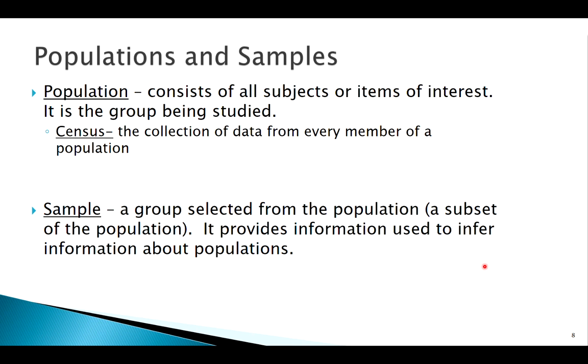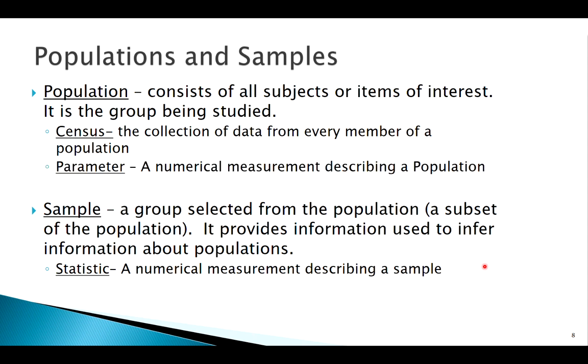A statistic, like we've already talked about, is some number that we calculate from our sample. So statistics are associated with our sample. And statistics should be, if we have a good sample, a good representative sample - we'll talk about what that entails in the future - but if we have a good sample, our statistics should be a pretty good reflection of our parameter. A parameter is a number that can be calculated or describes a population. So statistics go with samples, parameters go with populations.